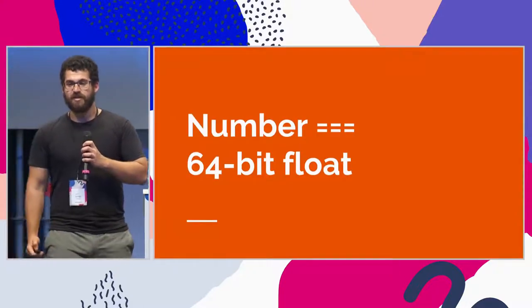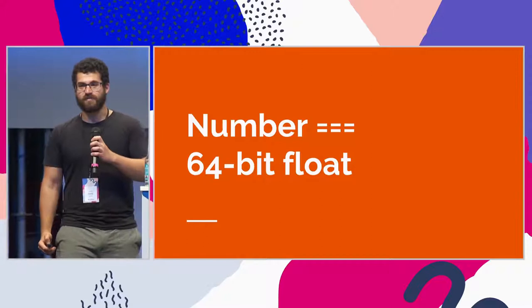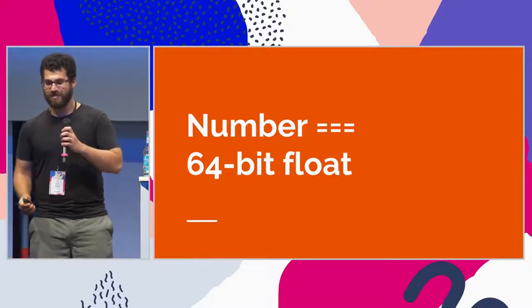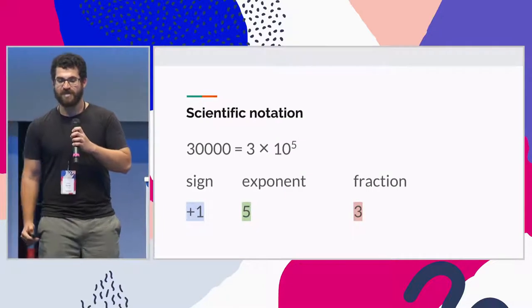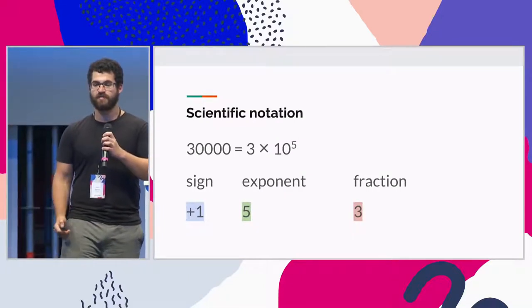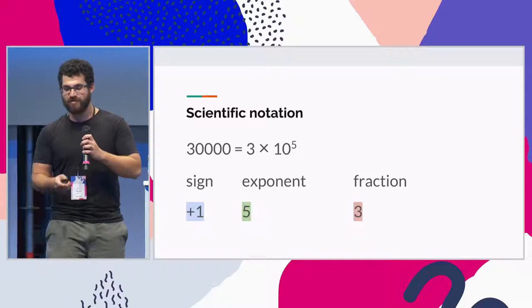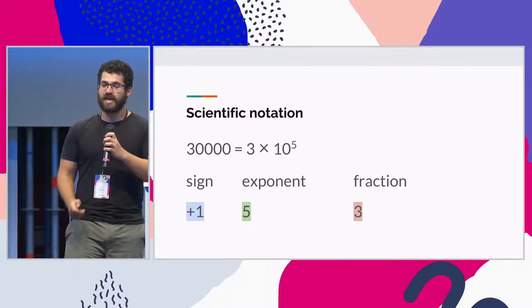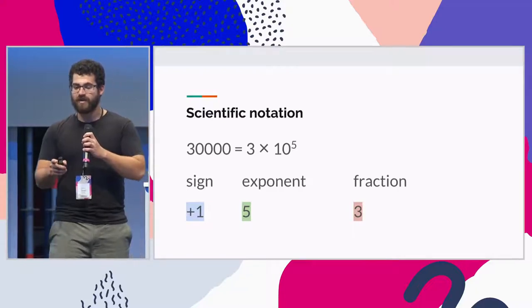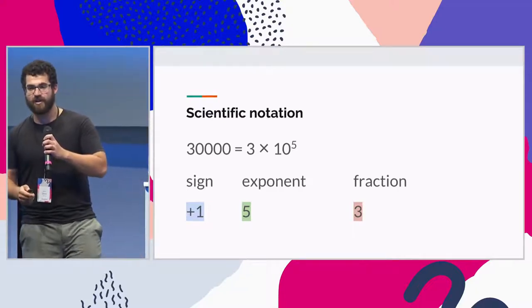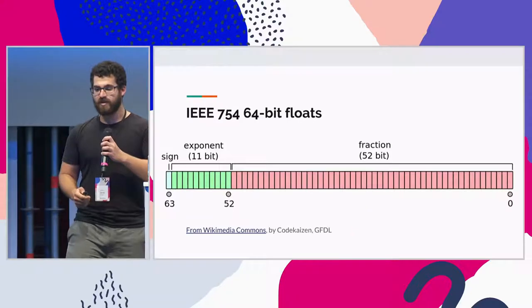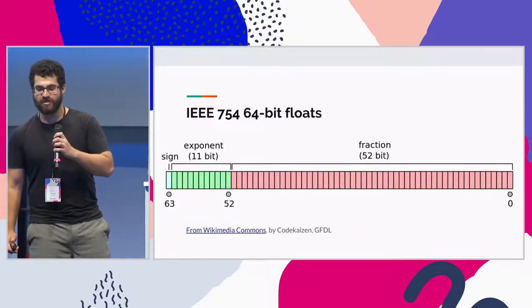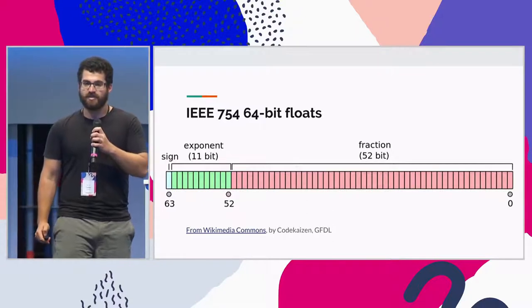Numbers in JavaScript are 64-bit floats — floating point binary numbers. That's basically like scientific notation. Remember from grade school, 30,000 you could represent as 3 times 10 to the 5. And here the exponent would be 5, the sign is positive 1, and the fraction is 3. And IEEE 754 floating point numbers are just like that, except it's base 2 instead of base 10.